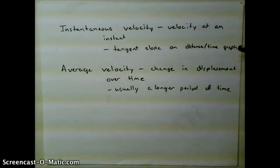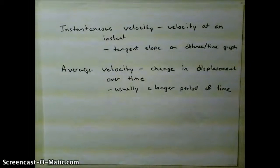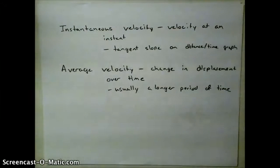Instantaneous velocity is the velocity at that instant. So an example of this might be on your trip to Omaha, you have to slow down to go 35 miles an hour through West Point. At that time, 35 miles per hour would be your velocity.